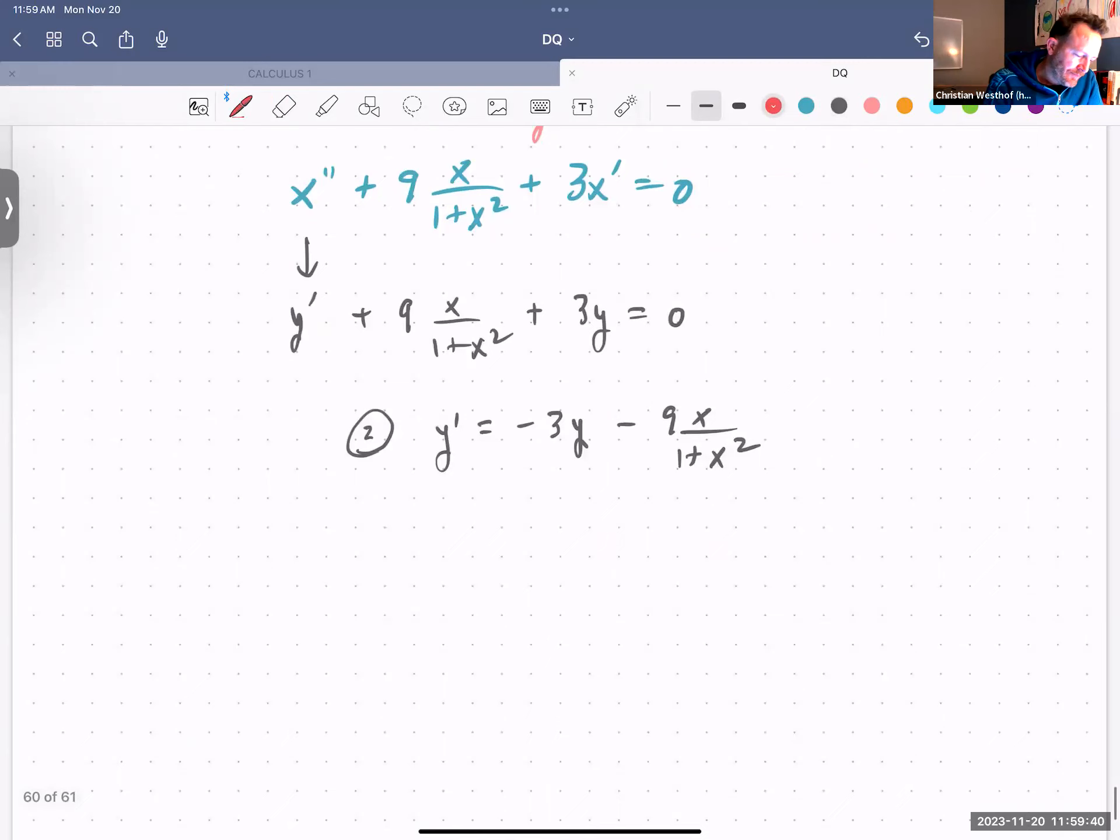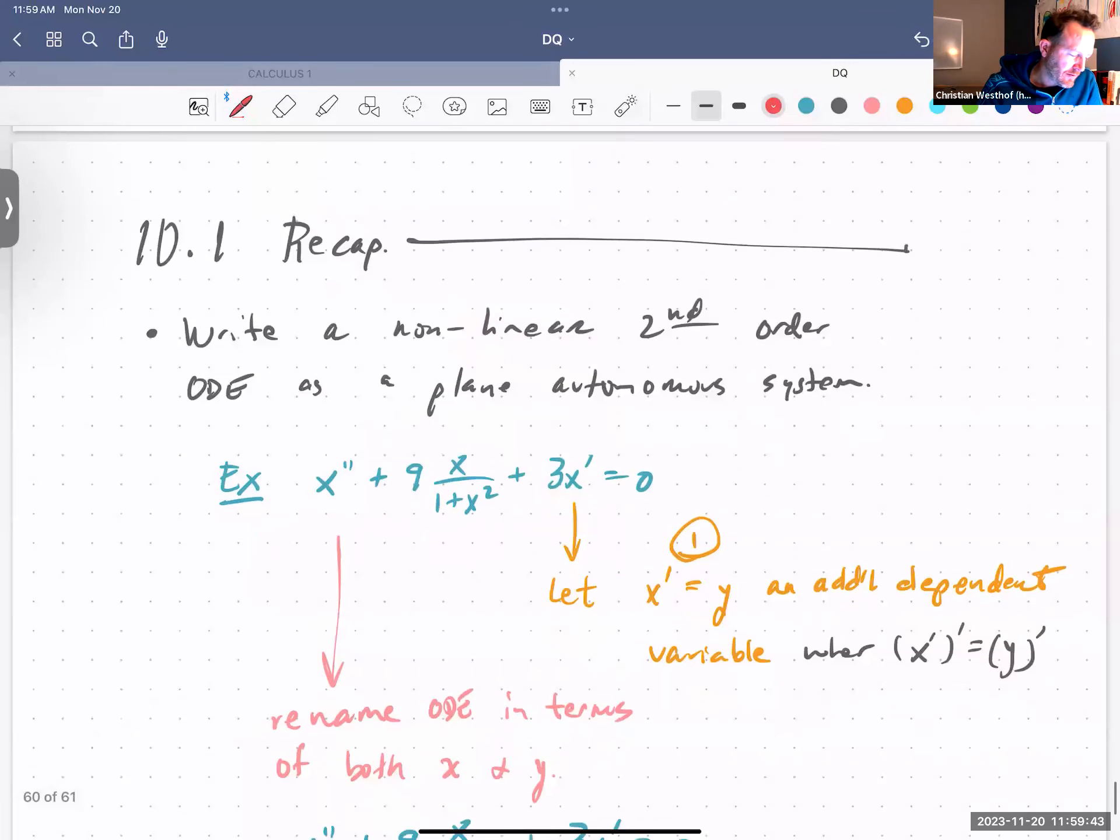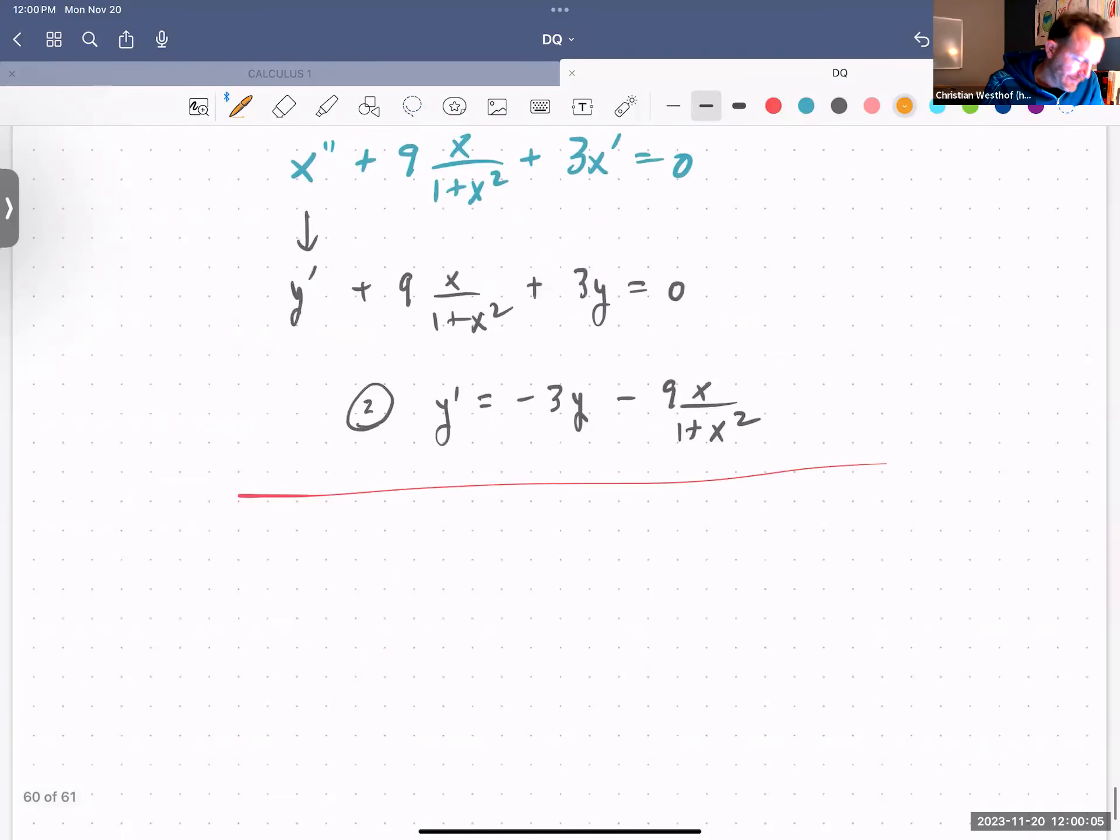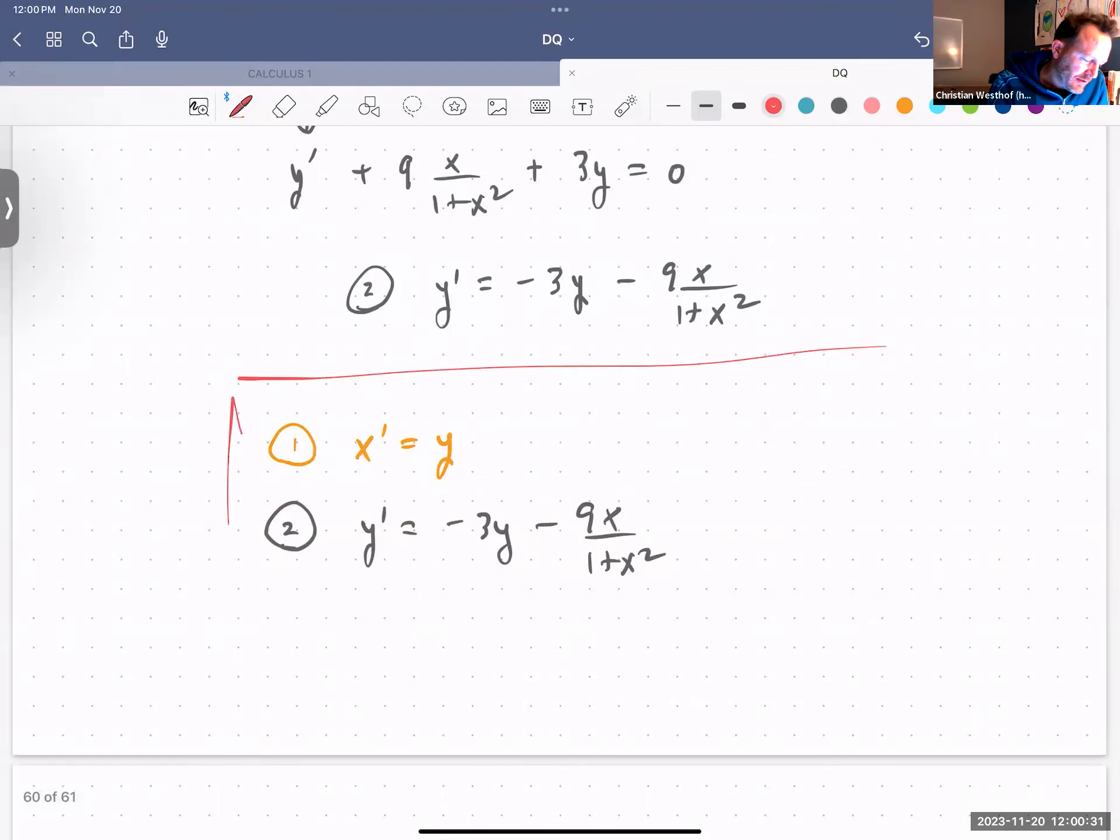So now just to be clear, the plane autonomous system that we're coming up with is equation one and equation two. Equation one was x prime equals y, and I'm going to write it as x prime equals zero x plus one y. Well, I'll just write it as x prime is equal to y. And then the second equation is y prime equals negative three y minus nine x over one plus x squared. That's our plane autonomous system.